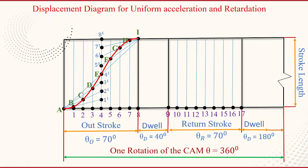Next is the dwell period. During the dwell period, the follower remains in the same position, so it is represented as a straight horizontal line.